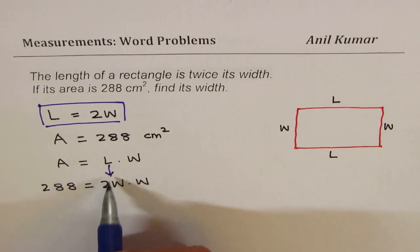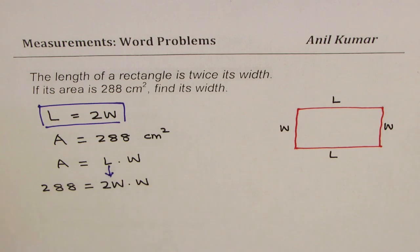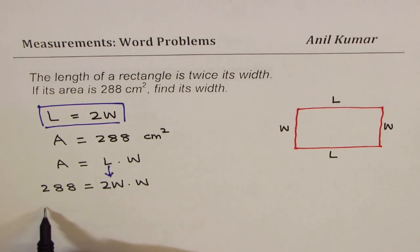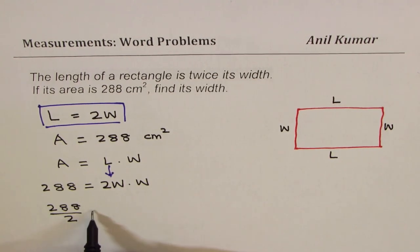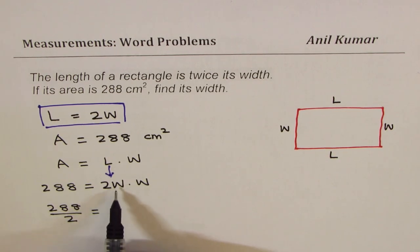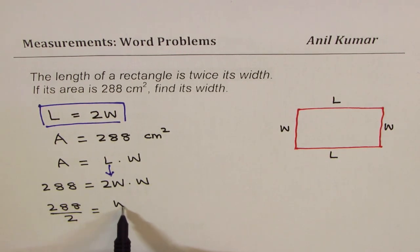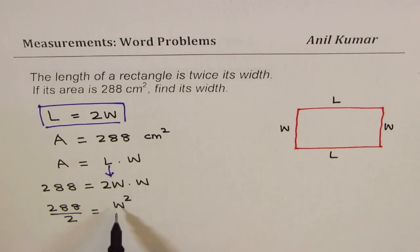Let me divide this by two, so we get 288 dividing both sides by two, and on the right side we get W times W, which is W square, square of the width.